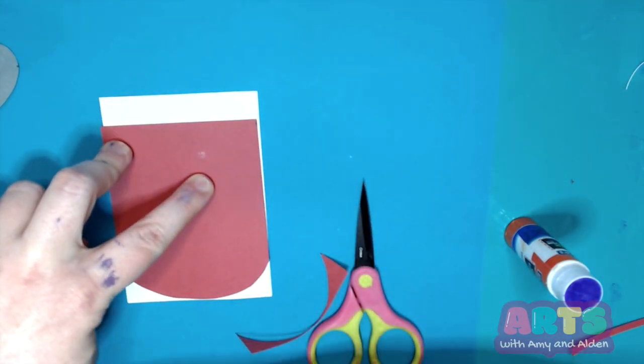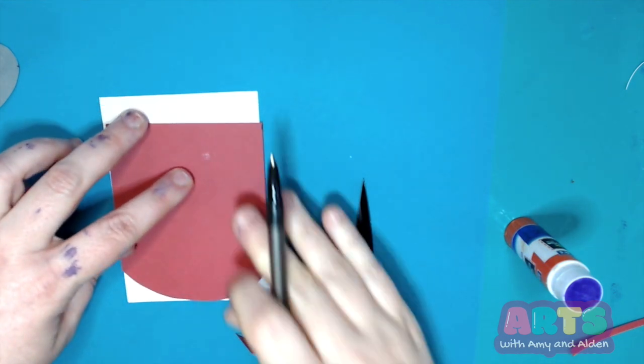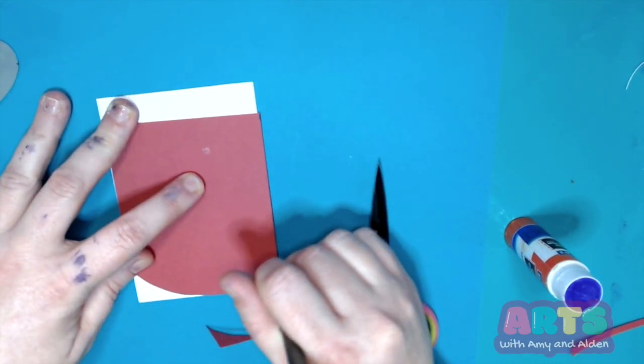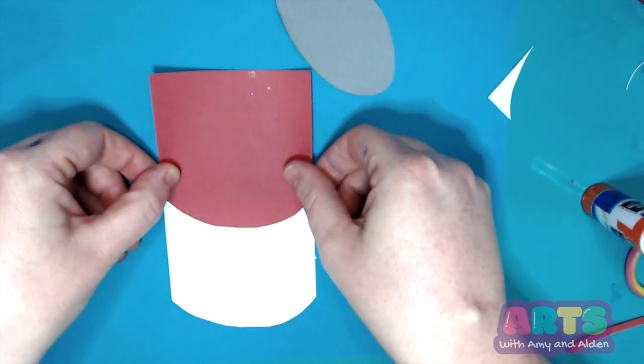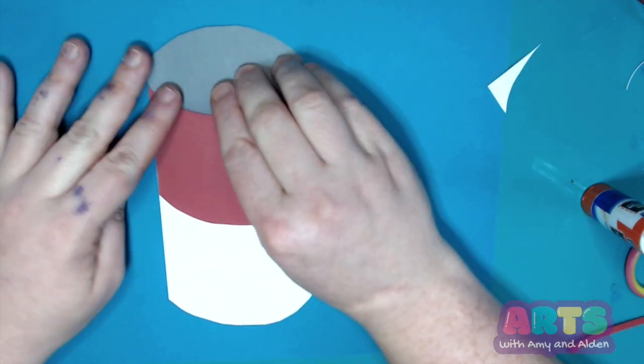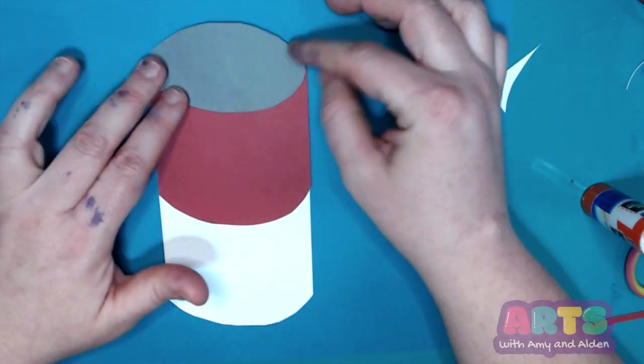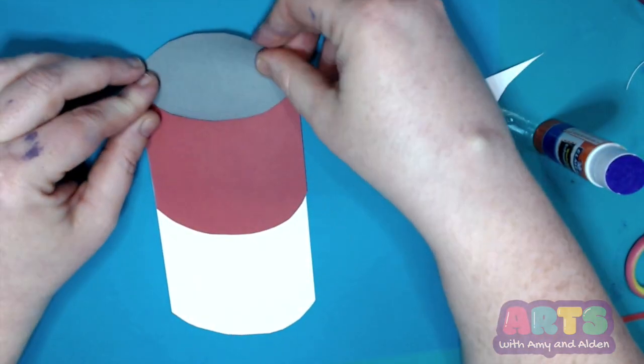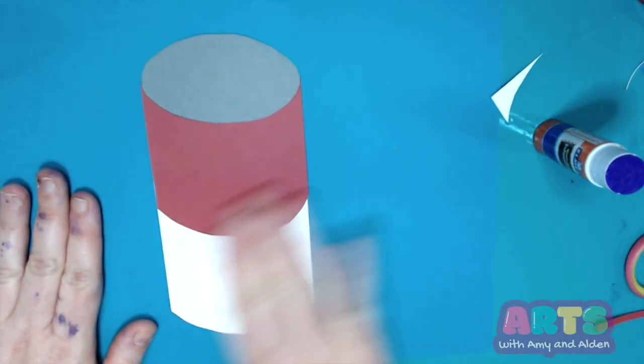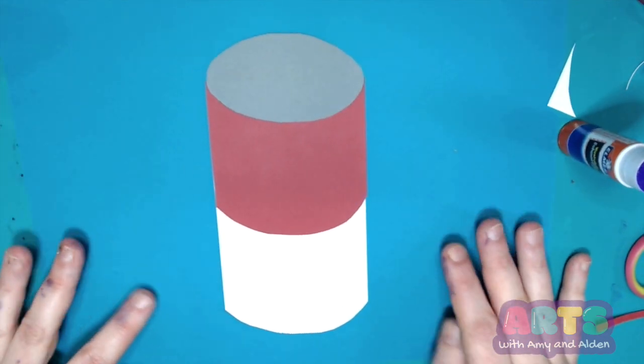them to the paper. So I'm starting with the bottom, the white piece of paper, and then I'm going to glue the red paper on top of that, and then I'm going to glue the gray circle on top of that. And look, we've got a cylinder! Now it needs some decoration. So you know I love glitter, so I'm